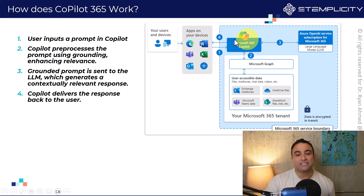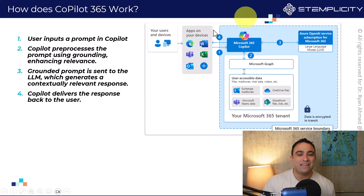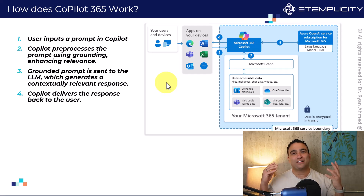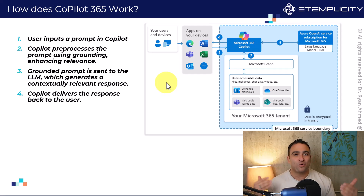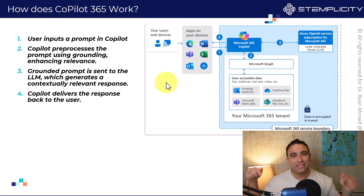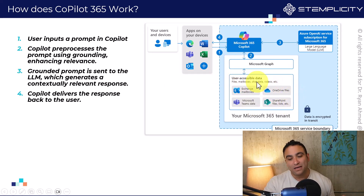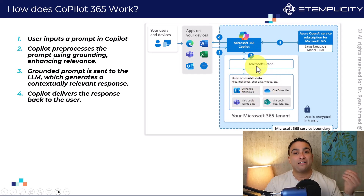And then finally, Copilot is going to reply back and deliver the response to the user. This is the main idea, and it's groundbreaking, because with ChatGPT you can just talk to it, but it doesn't understand a lot of context — you have to explain things, maybe upload files, and so on. But with Microsoft Copilot 365, it's grounded in your work. Within Microsoft Graph, it has access to all user-accessible data, like chat data, videos, files, mailboxes, and so on. So you get much better and more refined responses.